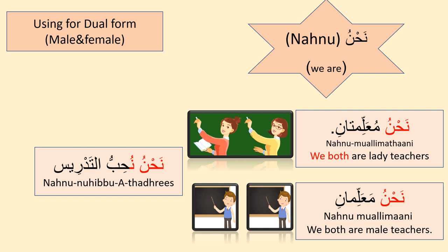Next is Nahnu meaning 'we are,' also a first person pronoun. It is used for dual and plural of male and female. For example: 'Nahnu muallimatani' — we both are lady teachers. 'Nahnu muallimani' — we both are male teachers. We use Nahnu for both dual male and dual female. In a verbal sentence after Nahnu, the verb will start with the letter noon.